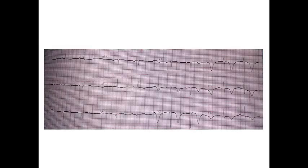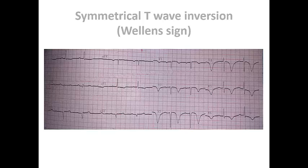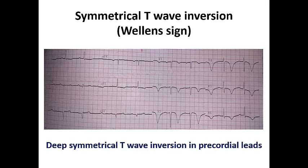In this ECG we have deep symmetrical T-wave inversion exceeding 5 mm — this is the Wellens sign, which will have a dedicated lecture right after this. Deep symmetrical T-wave inversion in the precordial leads is suggestive of subtotal or even total occlusion of the LAD and is very important to recognize in the ECG.